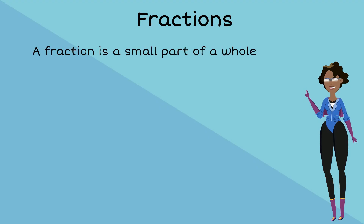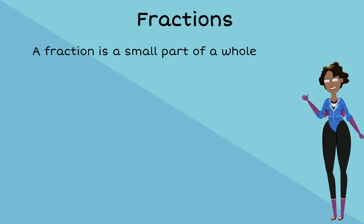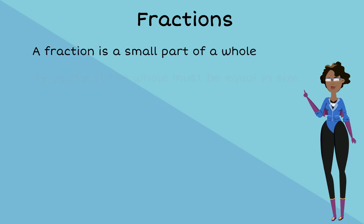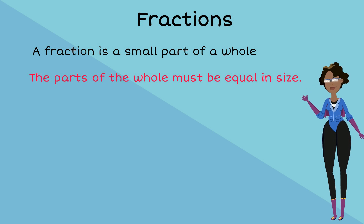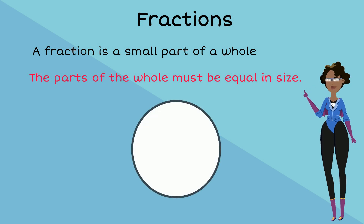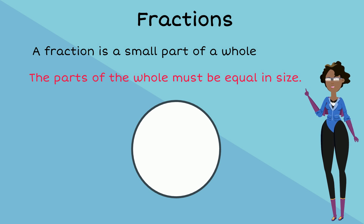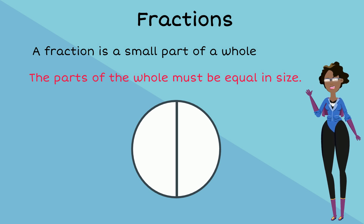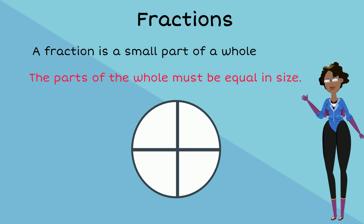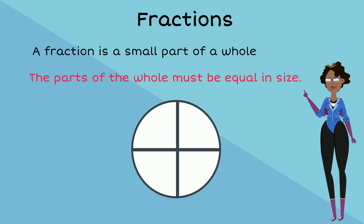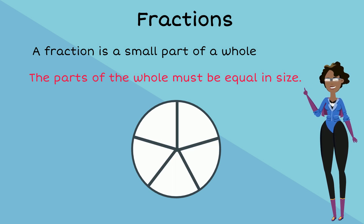A fraction is a small part of a whole, but the parts of the whole must be equal in size. We can divide a whole into any amount of equal parts. As we can see here, we can divide this whole into two equal parts, three equal parts, four equal parts, or even five equal parts.